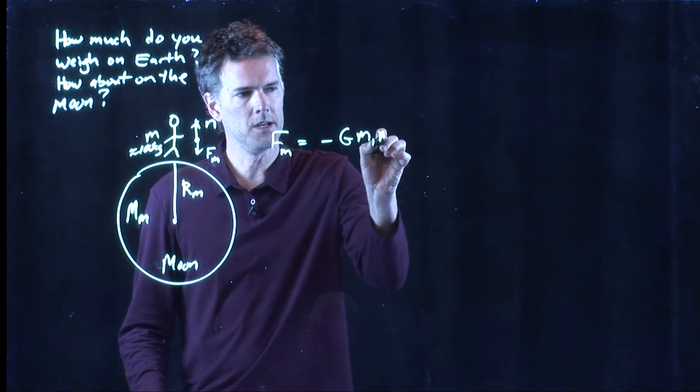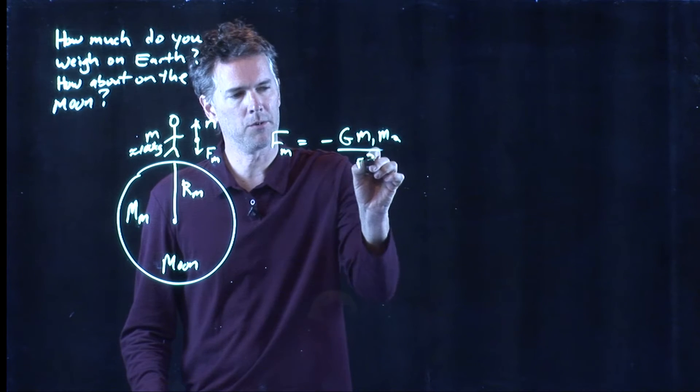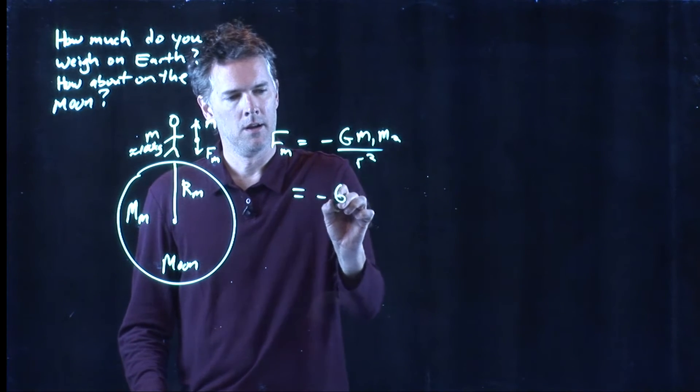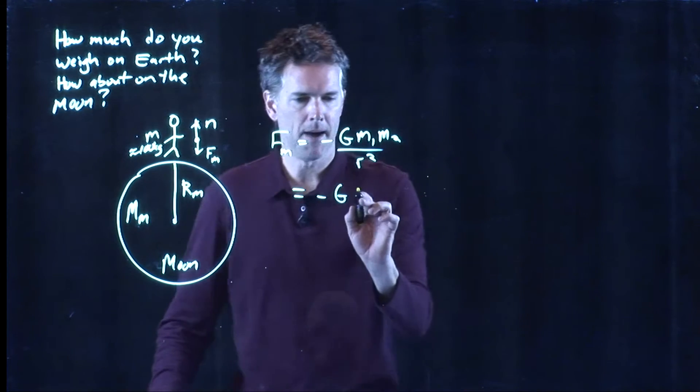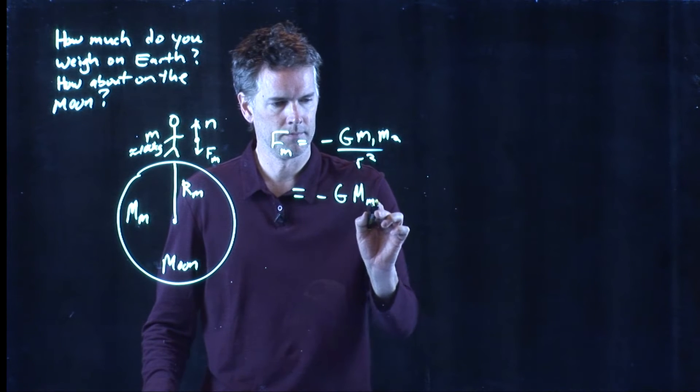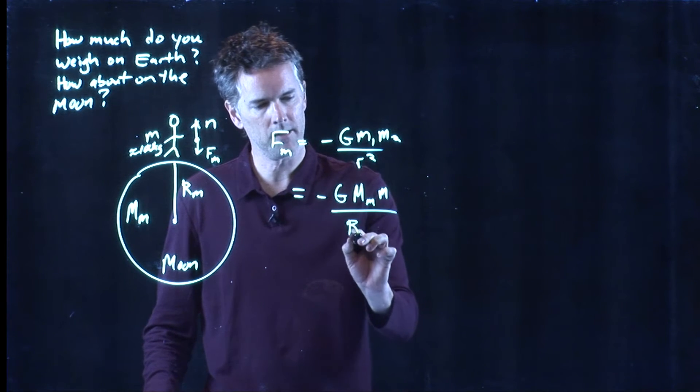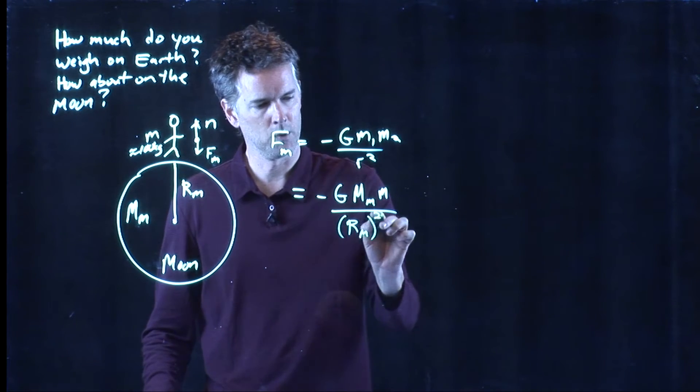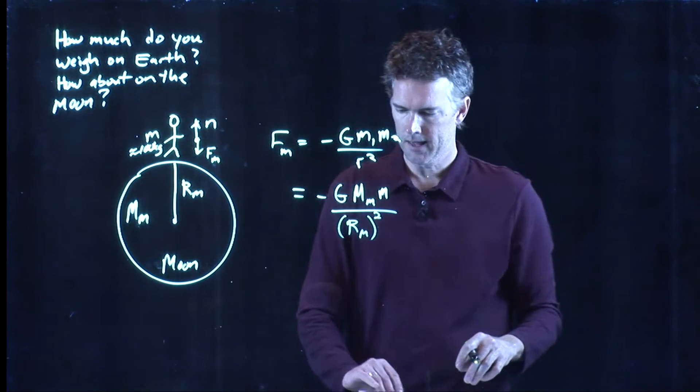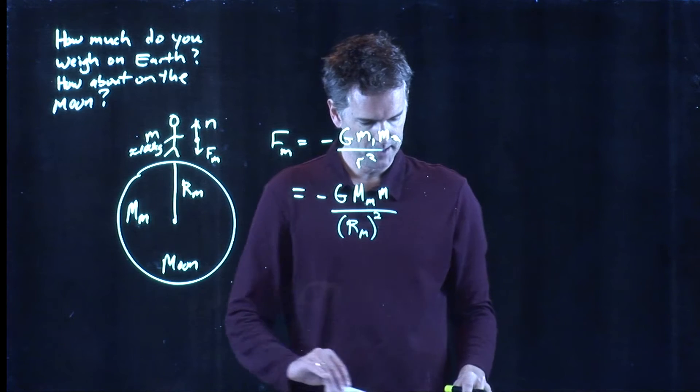And let's calculate what f sub m is in this case. It's still negative g m1 m2 over r squared. But now, of course, we have the mass of the Moon, the mass of you, and the radius of the Moon, quantity squared. And let's punch in some of those numbers and see what we get.